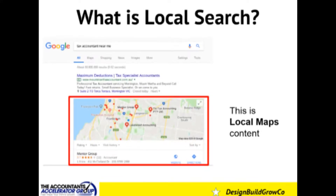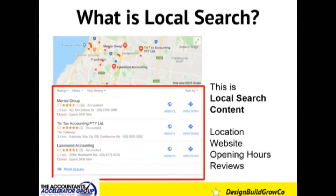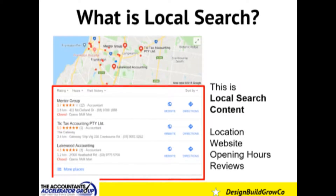The next section just below, also highlighted in red, is local maps. This is where you can really start to see results in your local search marketing. I searched for 'tax accountant near me' — it knows my location at the time of the search, so it populates the map with accountants specializing in tax and shows me where they are based on my proximity. The next section sitting just below that is called the local pack or local search content, and that is based on businesses — in this case accountants — displaying the most relevant information based on my search query.